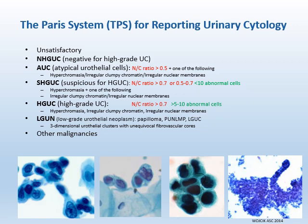The Paris system for reporting urinary cytology has seven diagnostic categories including: unsatisfactory; NHGUC — negative for high-grade UC; AUC — atypical urothelial cells; SHGUC — suspicious for high-grade UC; HGUC — high-grade UC; LGUN — low-grade urothelial neoplasm; and other malignancies. NC ratio and nuclear features are the main diagnostic criteria.